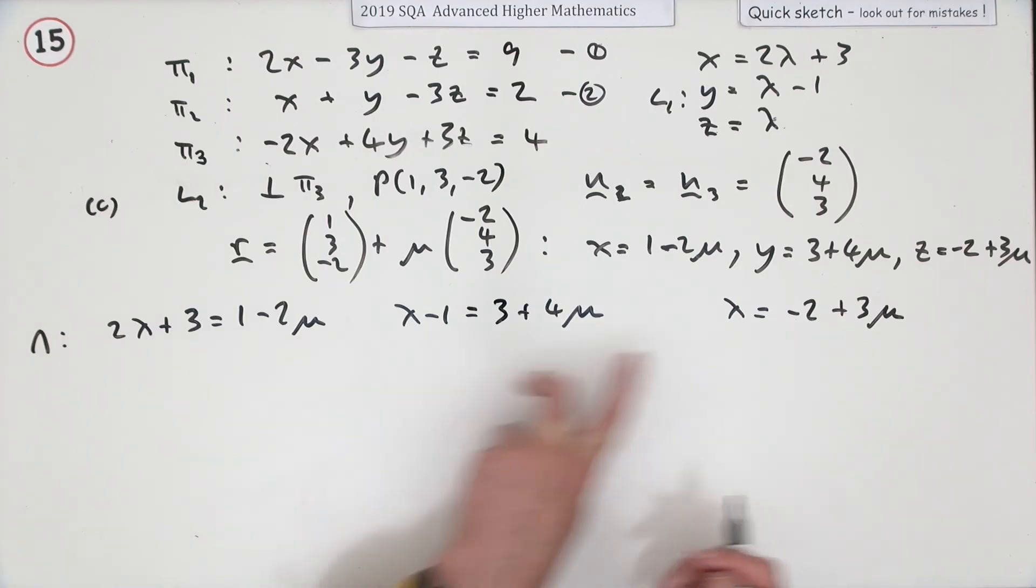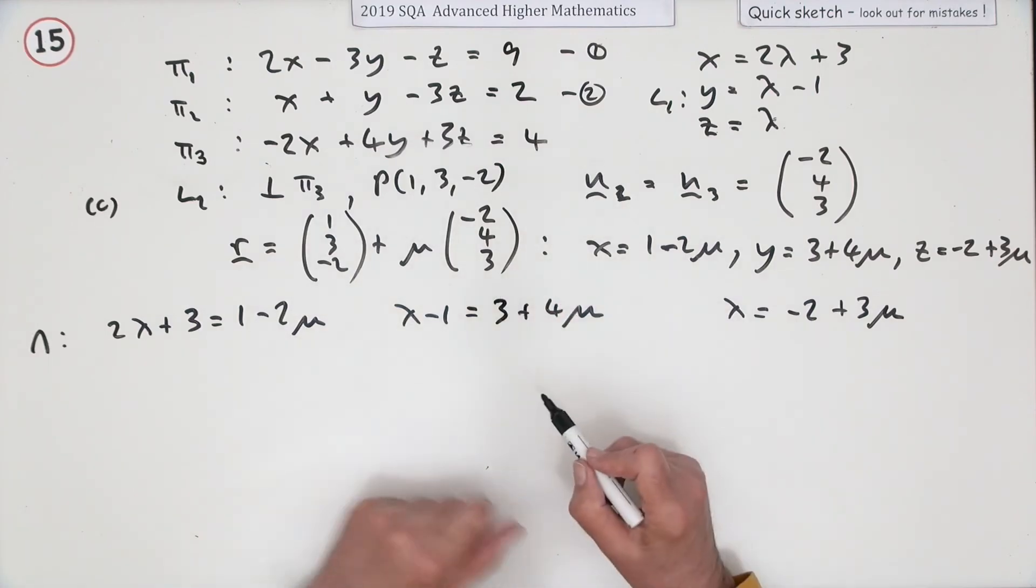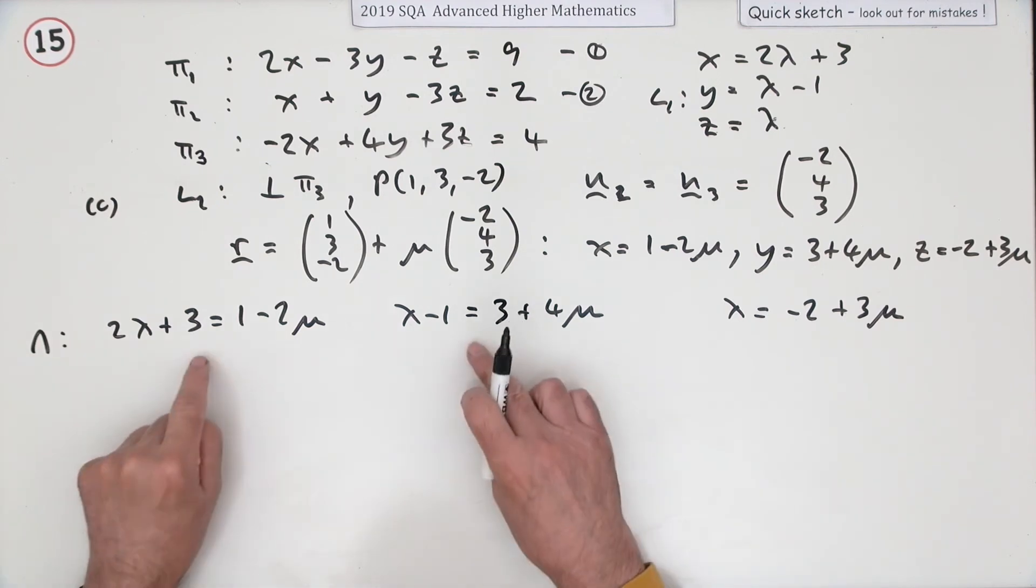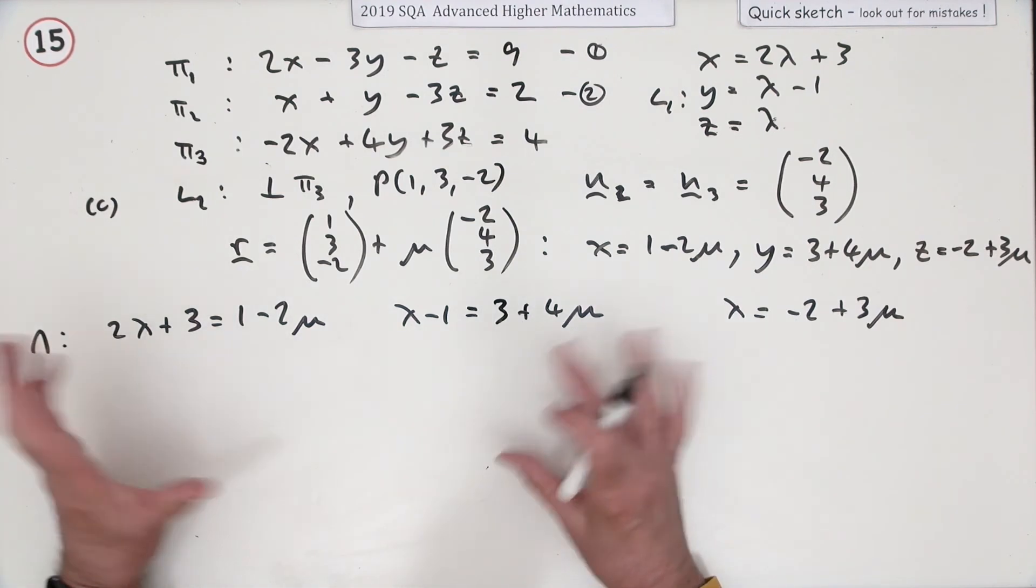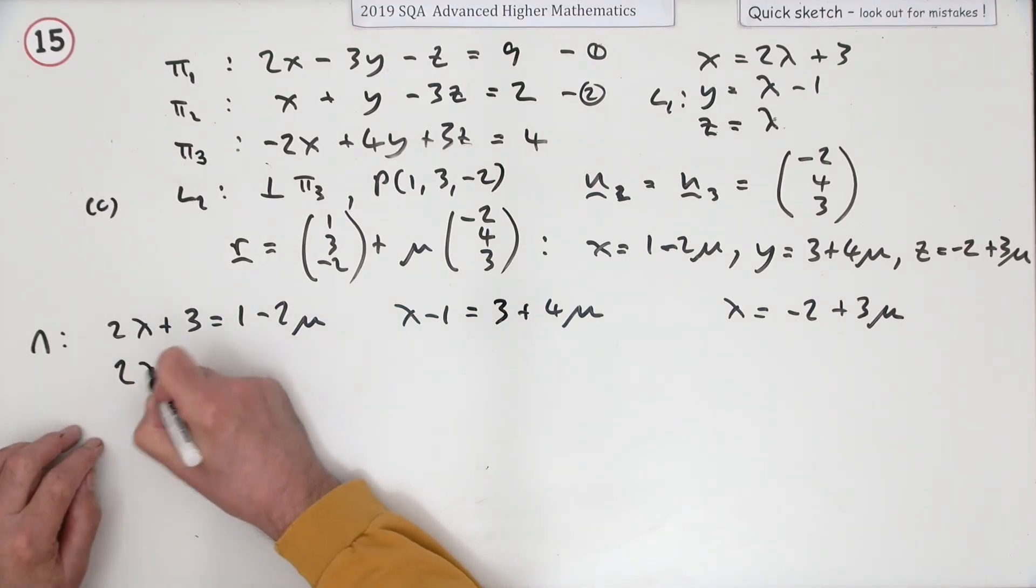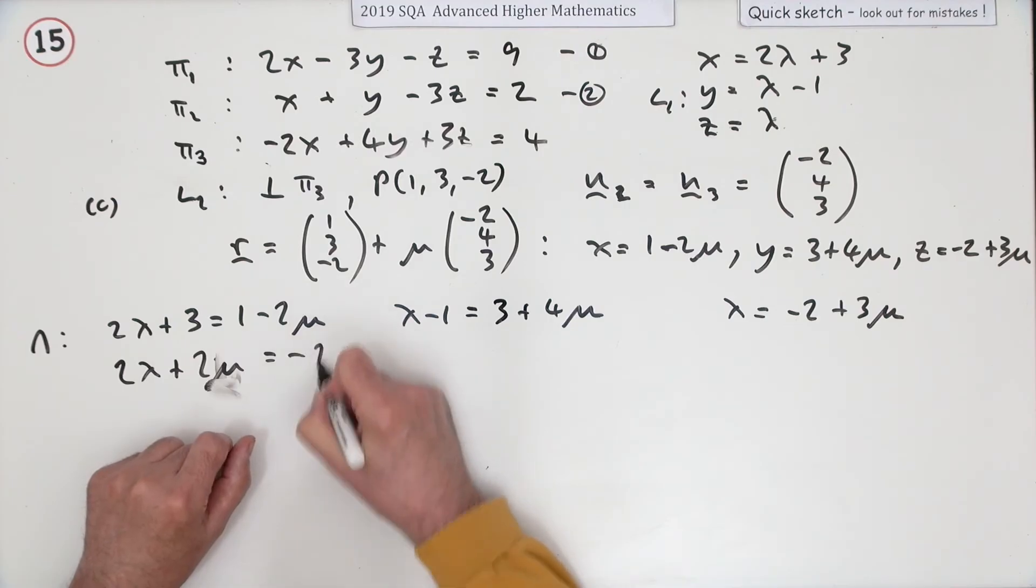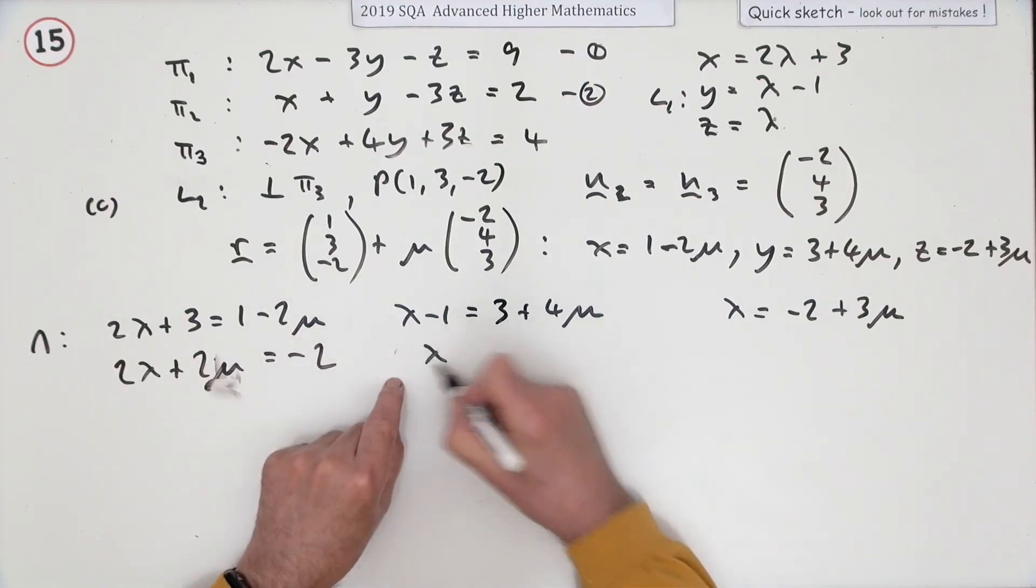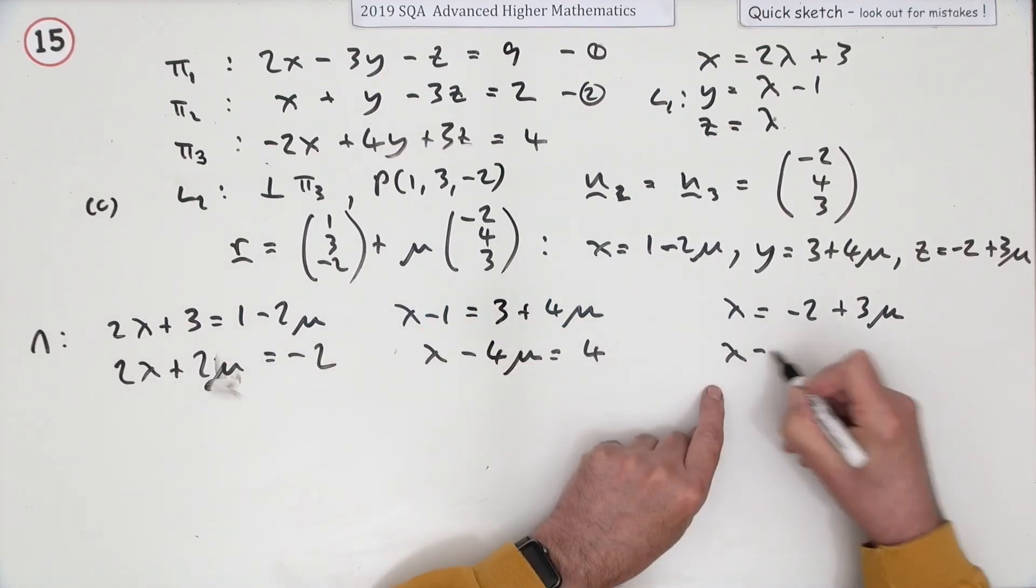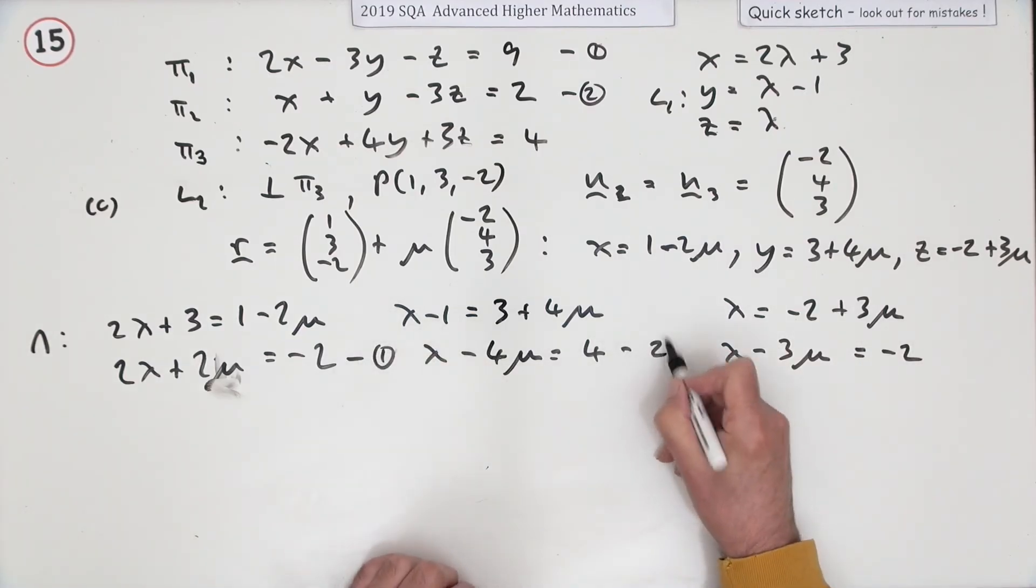These three have to be satisfied at the same time. It has to be the same pair of values that works for all three. If that's the case, they're consistent and you'll have a point of intersection. If it's not the case, then the lines will be skew and they'll actually miss each other. Now, it's almost going to work for two, because two equations and two variables will have a solution, unless those parts happen to be parallel. I'll just rearrange that. 2λ + 2μ equals -2. I could simplify, but I'm just going to leave it. λ - 4μ is 4, and λ - 3μ equals -2.